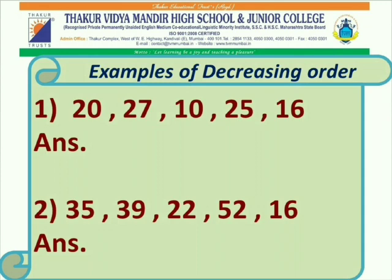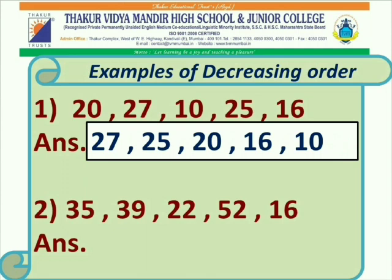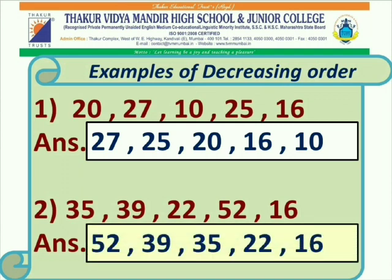Now, let us see the examples of decreasing order. Here we have two sets of numbers. In the first set, we have 20, 27, 10, 25, 16. When we arrange this set in decreasing order, we get 27, 25, 20, 16, and 10. Now, let us see the second set. In the second set, we have numbers 35, 39, 22, 52, 16. After arranging this set in decreasing order, we get 52, 39, 35, 22, and 16.